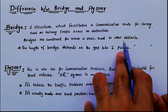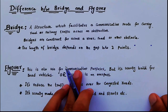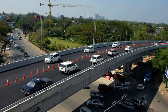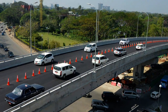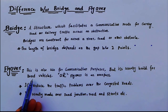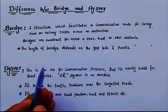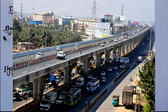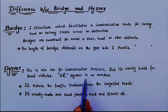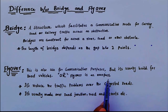The second one is flyover. This is also used for communication purposes like bridges, but remember that a flyover should be built for road vehicles only. We cannot build a flyover for a river or water places. We can design a flyover for road vehicles — we can also say that a flyover is an overpass.